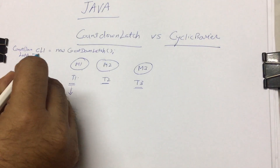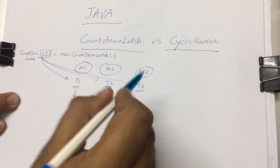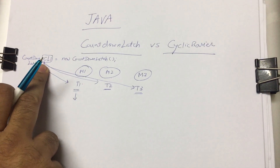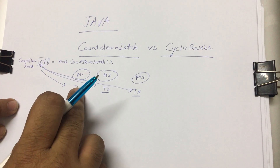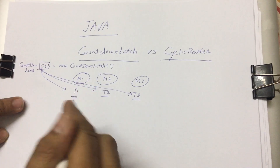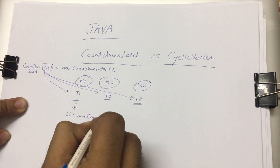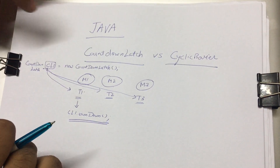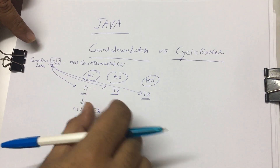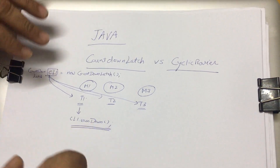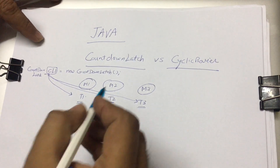This cl1 object is shared with t1, t2, and t3. After m1 responds, t1 calls cl1.countdown(). While initializing the CountDownLatch, you specify how many threads will call countdown — after that, all threads waiting on the await method will get notified.